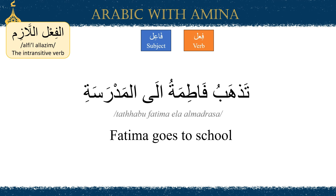Another example would be تذهب فاطمة إلى المدرسة. The subject here is فاطمة, and the action she is performing, or the verb, is تذهب, meaning 'goes.' There is no object in this sentence. إلى المدرسة, or 'to school,' is a prepositional phrase — it is not an actual object, because we're saying she went to a place, not that she did something to the school.